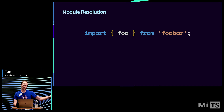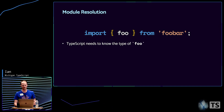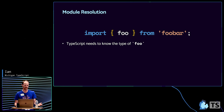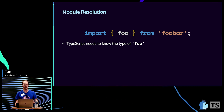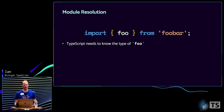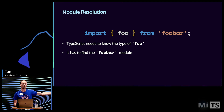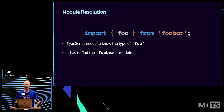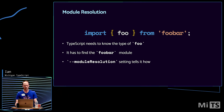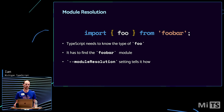Say you have an import like this — you're importing foo from foobar. TypeScript needs to know the type of foo so that it can check that you're using it correctly. And in order for it to know what foo's type is — importantly, it's not about the running of it or the bundling or any of that, it's just what are the types of foo — it needs to know where to find foobar. And depending on the module system you're using, that could be in several different places. The module resolution setting for TypeScript tells it the rules it needs to use to look for foobar and find the types.